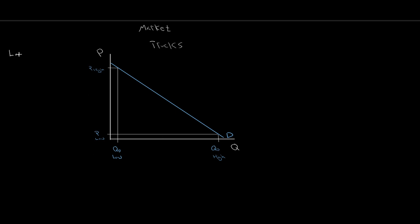This is known as the law of demand, which states that price and quantity demanded are inversely related: if the price rises, the quantity demanded falls, and vice versa — if price falls, quantity demanded rises.